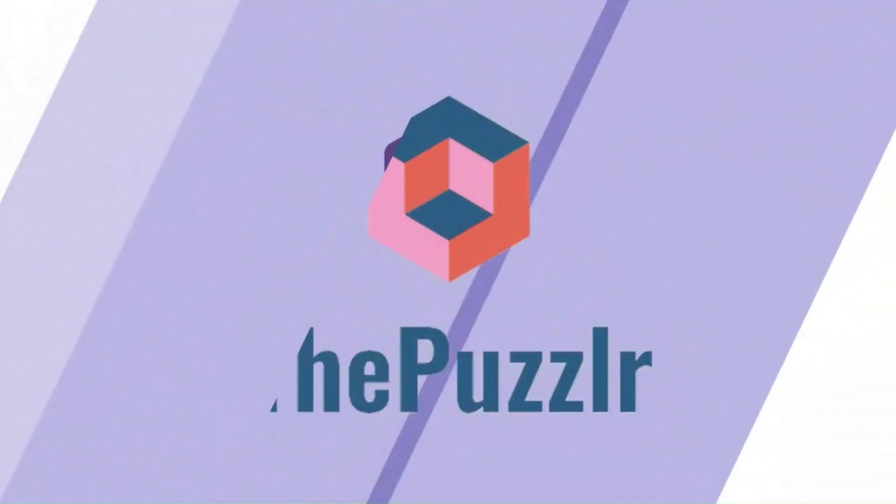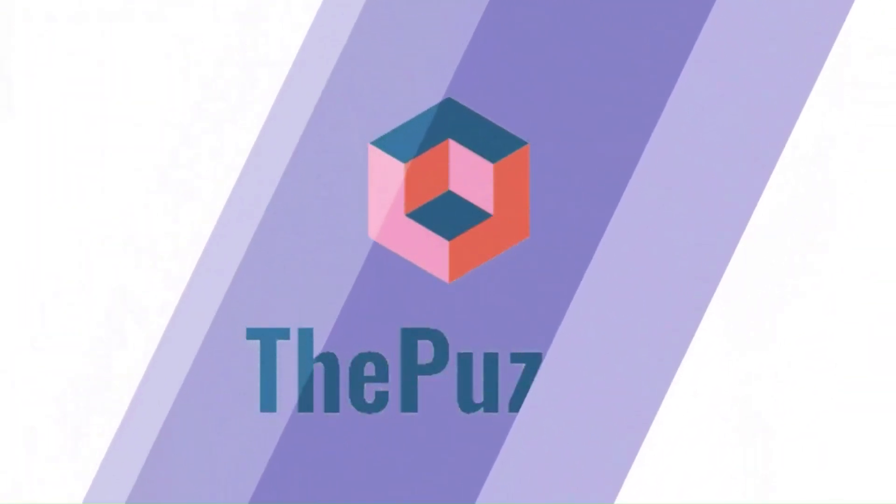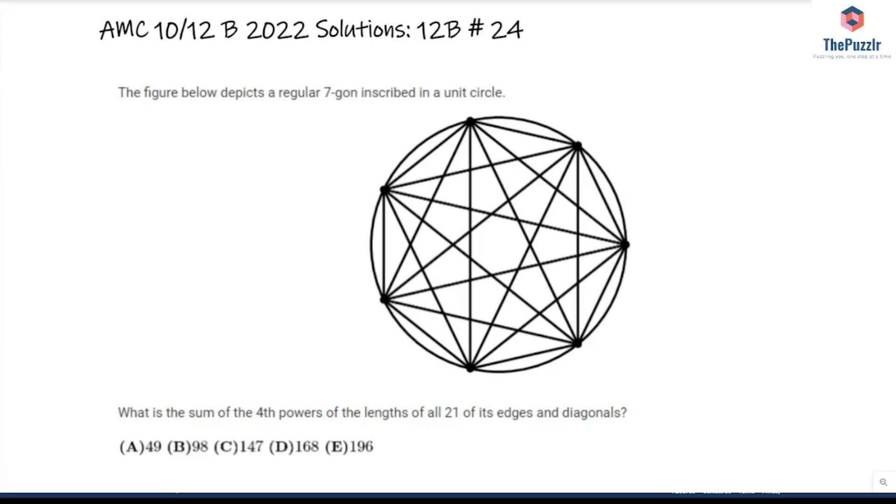This video is brought to you by ThePuzzler.com. Problem number 24 from the AMC-12B. The figure below depicts a regular 7-gon inscribed in a unit circle. What is the sum of the fourth powers of the lengths of all 21 of its edges and diagonals?